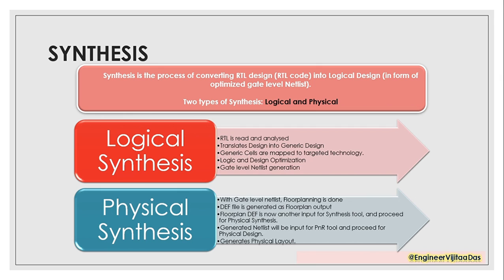There are two types of synthesis: one is logical synthesis and another is physical synthesis. We need to do logical synthesis first, then only physical synthesis is possible. For logical synthesis, the tool needs three basic things: one is RTL, another is the constraints, and third is the logical libraries, which have timing, power, and area information. These are the three inputs required for logical synthesis.